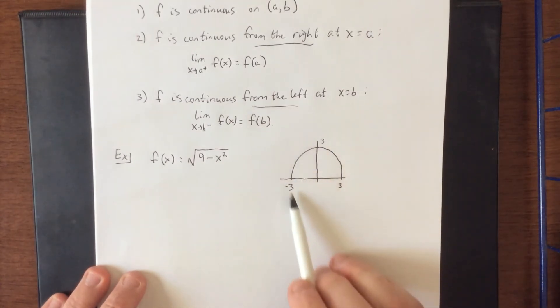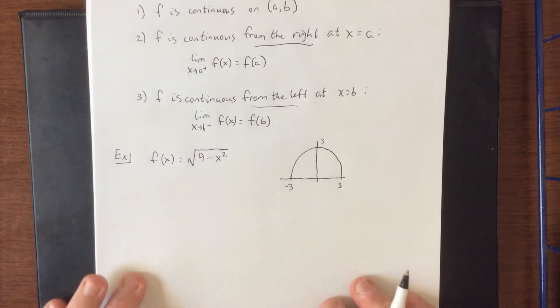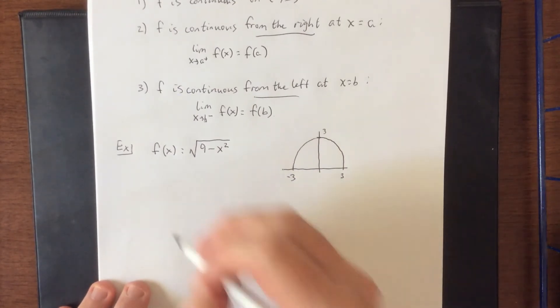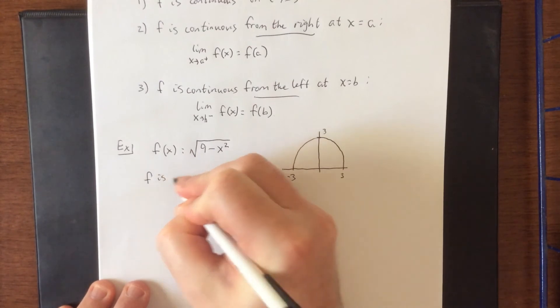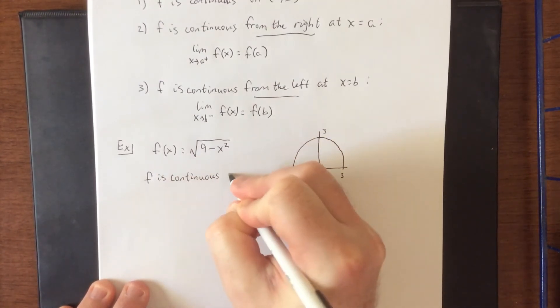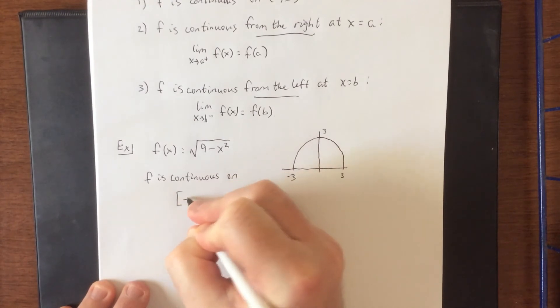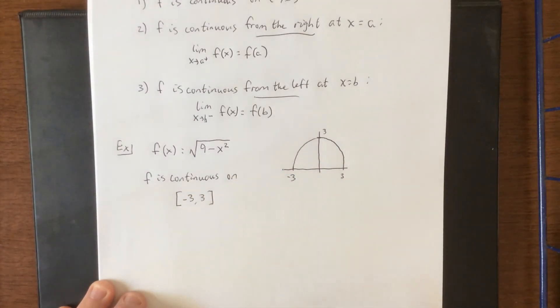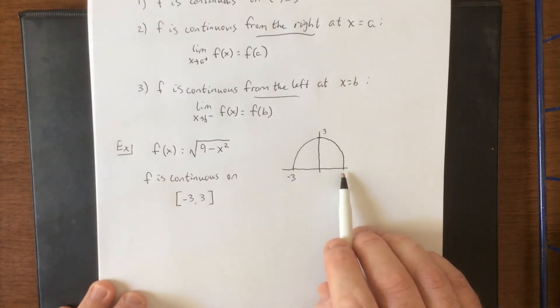Now given that it's a semicircle and I'm able to draw it with one fell swoop like that, we would say that f is continuous on the closed interval from negative 3 to positive 3. It's impossible for us to have a two-sided limit at negative 3 or at x equals 3 due to the fact that that's not part of the domain of the function.